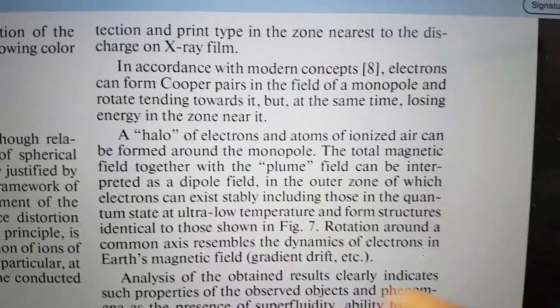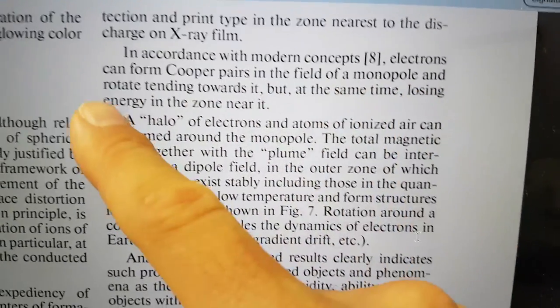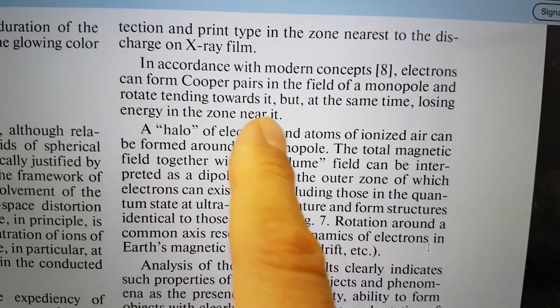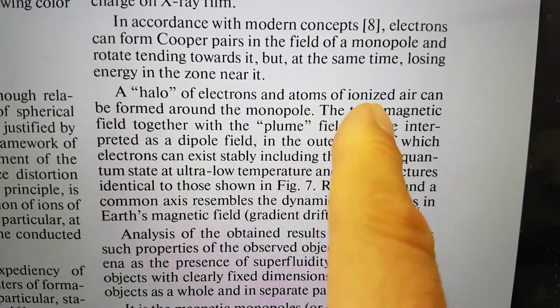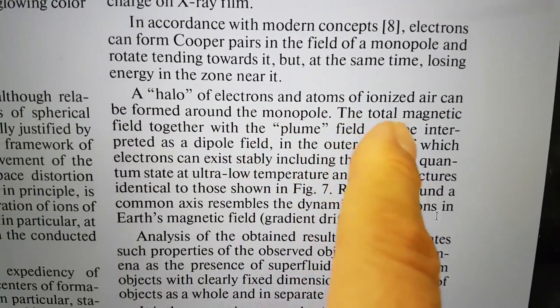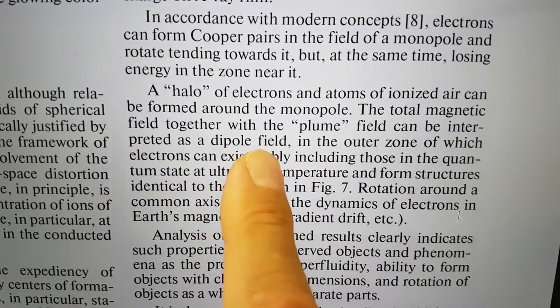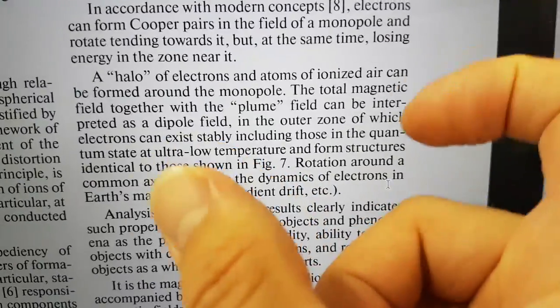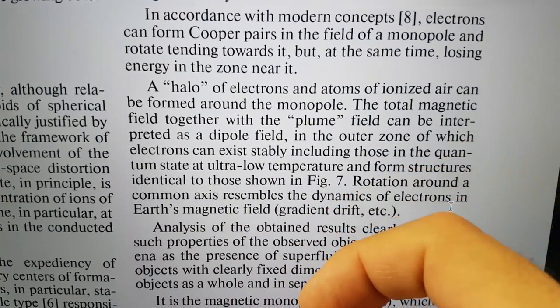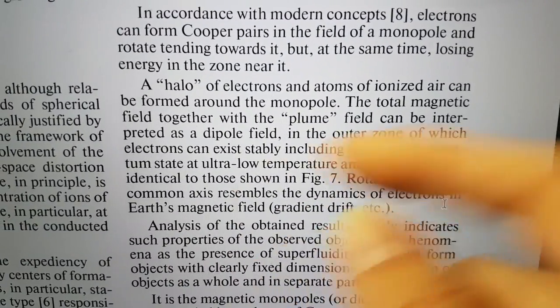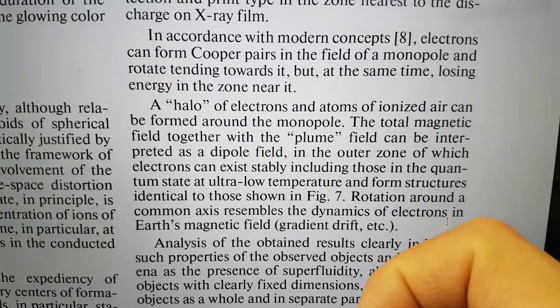There's a couple other bits I want to grab. In accordance with modern concepts, electrons can form Cooper pairs in the field of a monopole and rotate tending towards it, but at the same time losing energy in the zone near it. A halo of electrons and atoms of ionized air can be formed around the monopole. The total magnetic field, together with the plume field, can be interpreted as a dipole field. It's a bit like the structure that I shared at Sochi. You've got something in the middle where everything's going. It's got some intense gravity in there. That causes some spinning, things going in towards it. But as things spray out, it can be interpreted as a dipole.